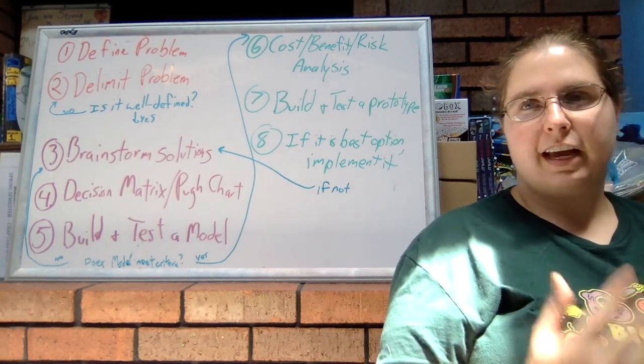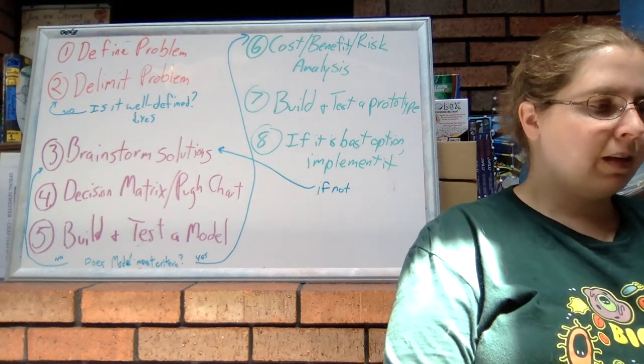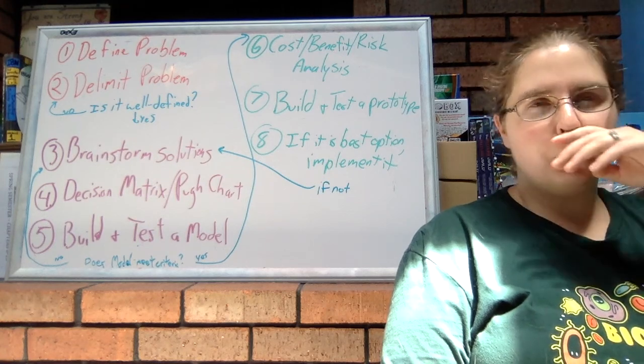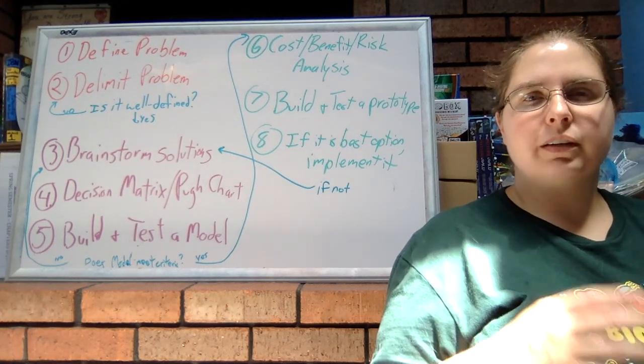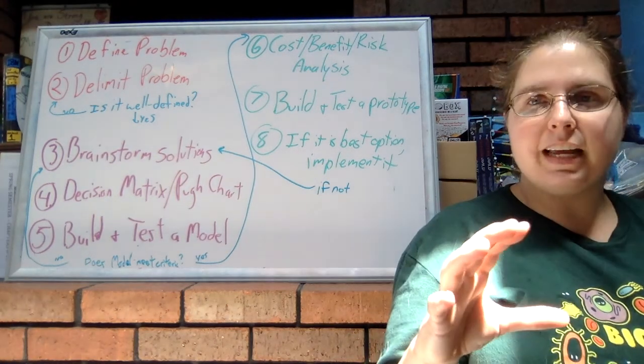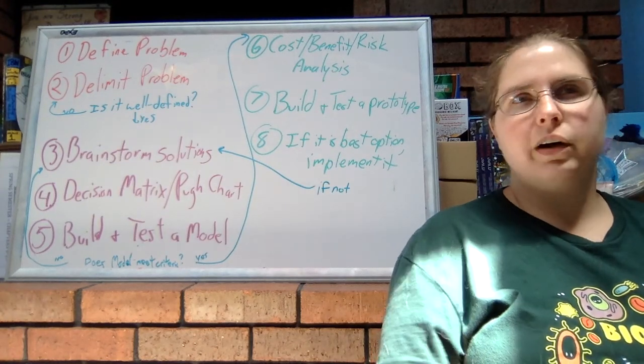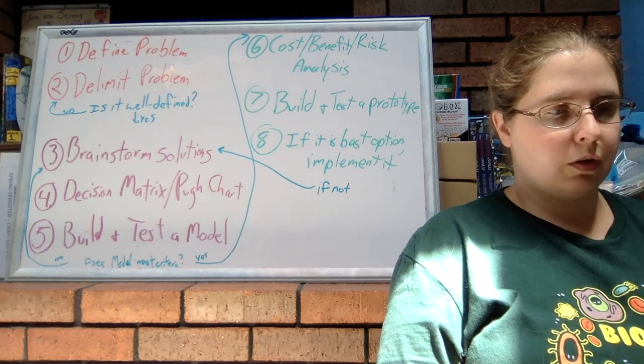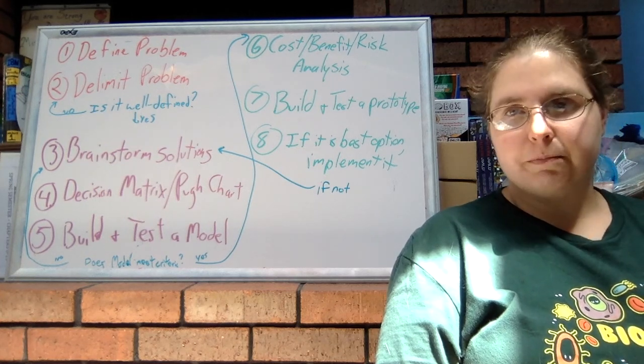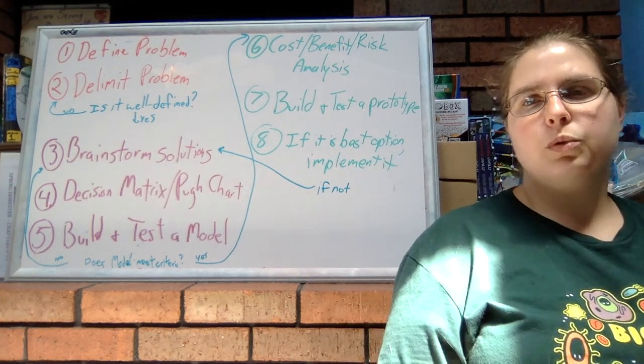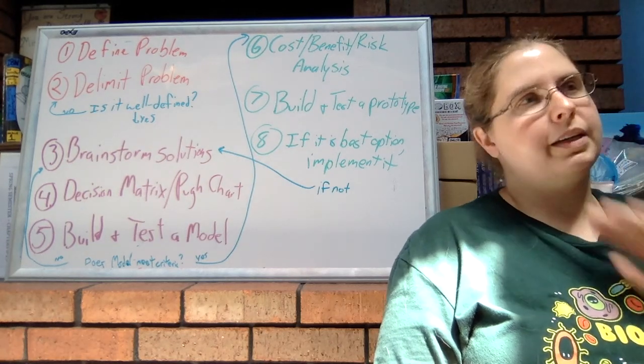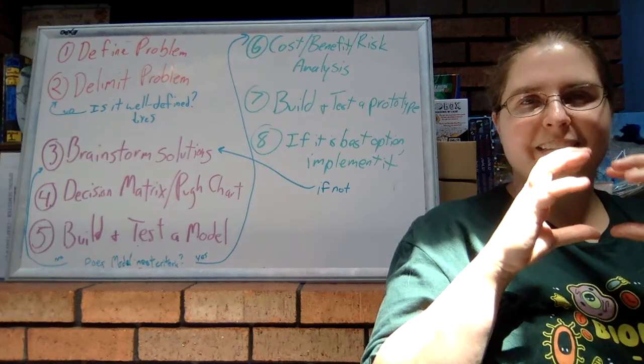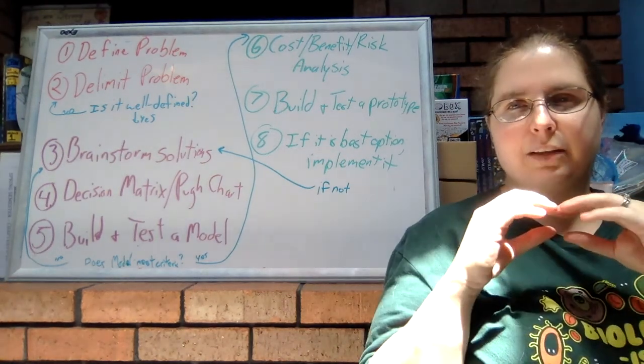And then we're going to delimit the problem—that's our next step. Now when we delimit a problem, that means that we're going to kind of define everything and figure out what are the exact limitations. Is it that we need more information? What kind of materials would we need to get? Will it be an expensive process? So we're going to go through and try and define the problem as much as we can.